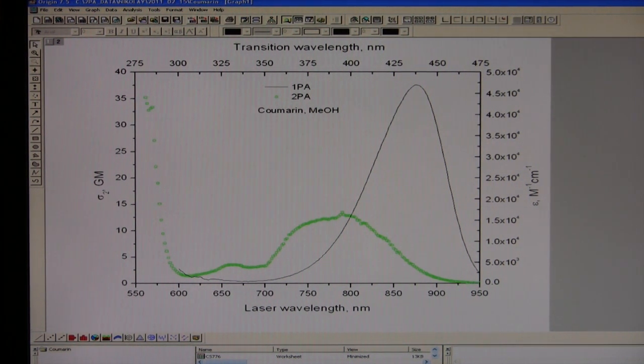The data measured with our spectrometer can be used for example to select a particular wavelength at which compound has strongest two photon absorption to be used in two photon microscopy.